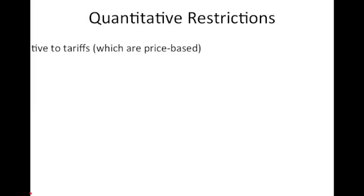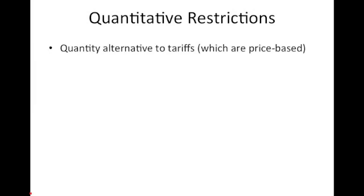Take a look now at an alternative to tariffs as a way to reduce the amount of imports that come into a market. A tariff is a direct way to limit imports by raising the price of a good. A quantitative restriction instead just limits the quantity of goods that come into the market — it could be as a share of the total market or just a simple quantity per given year.